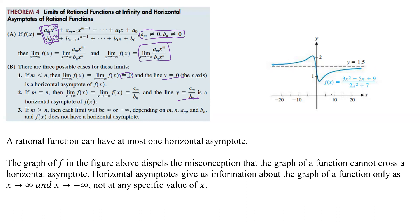If m is greater than n — the numerator's exponent is bigger than the denominator's — then each limit will be either positive or negative infinity depending on m, n, a_m, and b_n, and f(x) does not have a horizontal asymptote. A rational function can have at most one horizontal asymptote, because there are three cases and you can only satisfy one of them.